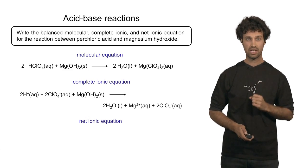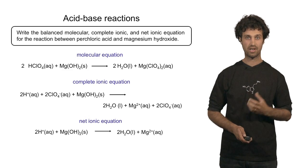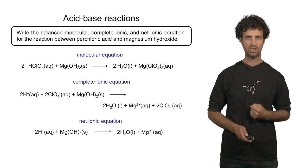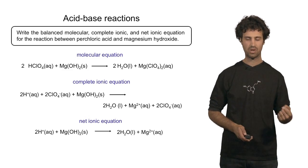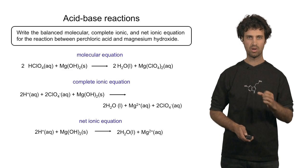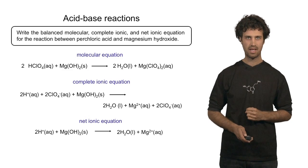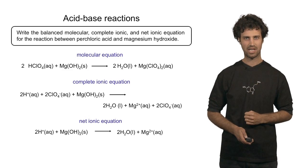So the net ionic equation looks like this: on the reactant side, the proton interacts with magnesium hydroxide to form water and magnesium cations.